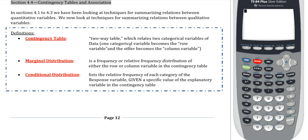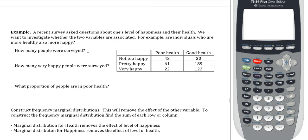We're going to go through a few different examples. The first one is pretty easy; the second has larger numbers so it's more of a pain. A recent survey asked questions about one's level of happiness and their health — those are our two qualitative variables. We want to investigate whether they are associated; for example, are individuals who are more healthy also more happy? In the two-way table we have poor health and good health as one variable, and not too happy, pretty happy, and very happy as our level of happiness.